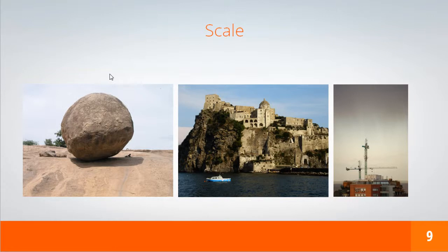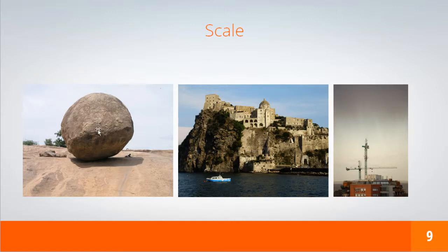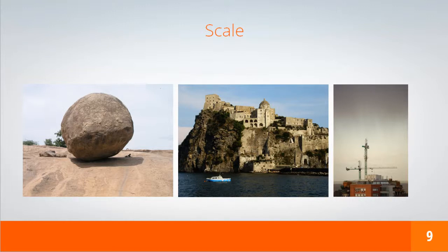Scale is our next subject. By using scale in our composition it will help you establish some important relations between the elements in your image. For example, we can see a rounded stone but we only realize how big it is when we see it in relation to the goat near it. In the second image we have scale relations between the castle, the cliff and the boat. In the third image we can see how tall the cranes are by relating them to the building at the bottom of our image.